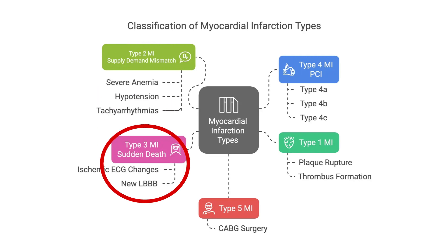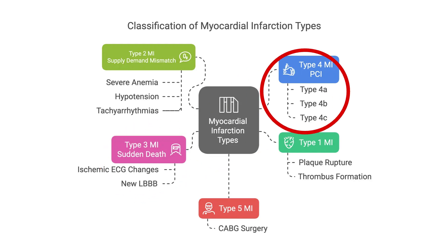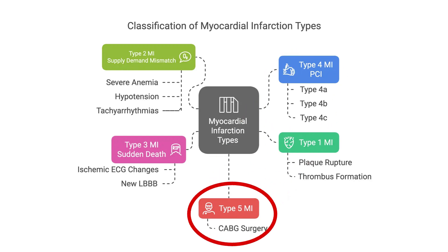Type 3 MI is sudden death with previous symptoms suggestive of myocardial ischemia or new ECG changes, but the patient dies before cardiac biomarkers are obtained or have risen. Type 4 MI is related to percutaneous coronary intervention: 4A is during or after PCI, 4B is due to stent thrombosis, and 4C is due to stent re-stenosis. Type 5 MI is related to coronary artery bypass grafts.